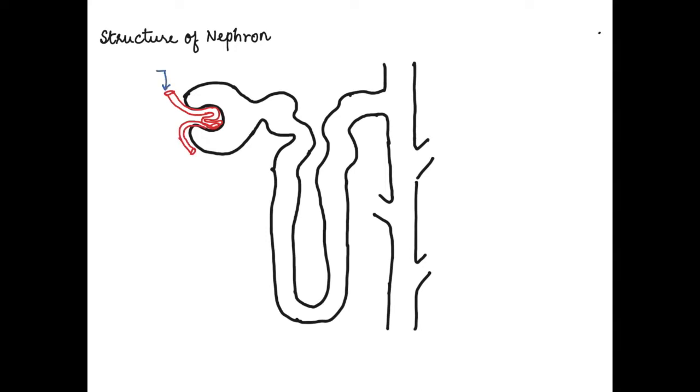First, let's label the blood vessel that brings blood to the nephron, called the afferent arteriole. The afferent arteriole then forms a network of capillaries inside the capsule called the glomerulus. The blood vessel that comes out is called the efferent arteriole, which is lesser in diameter compared to the afferent arteriole.